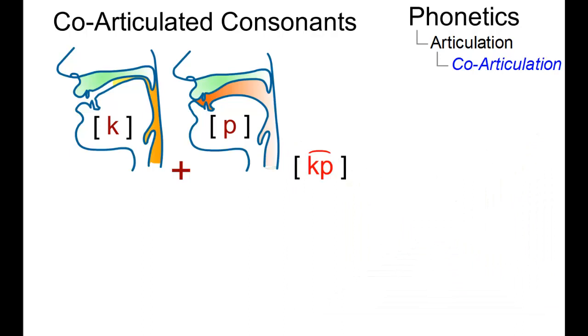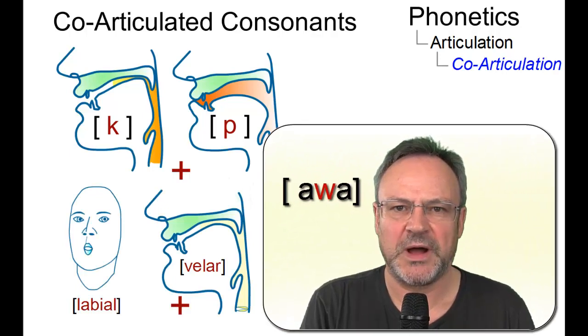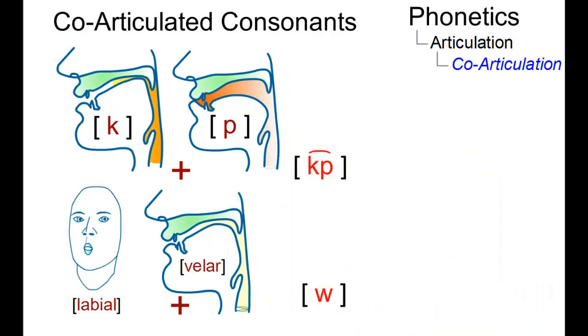Or take the labiovelar w. In both cases, we have two primary places of articulation that are articulated together.